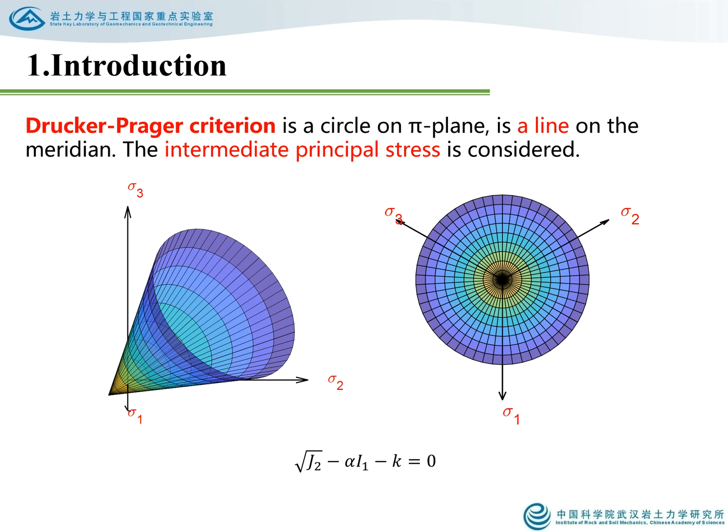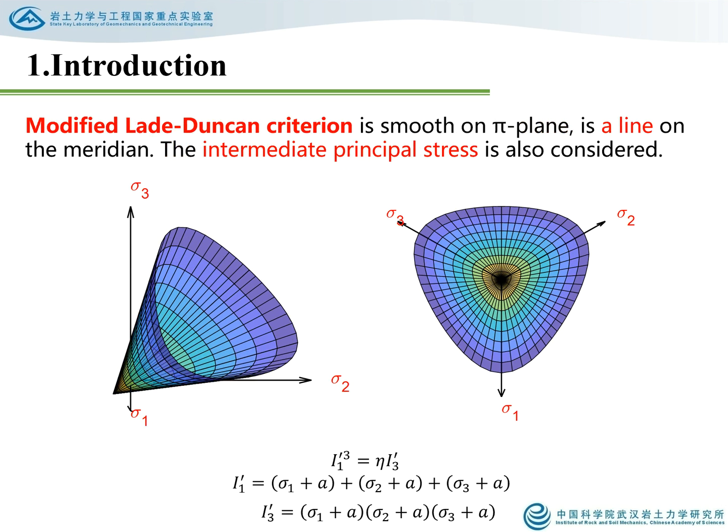The Drucker-Prager criterion is a circle on the pi plane and a line on the meridian. The intermediate principal stress is considered. The Modified Lade-Duncan criterion is smooth on the pi plane and is a line on the meridian. The intermediate principal stress is also considered.